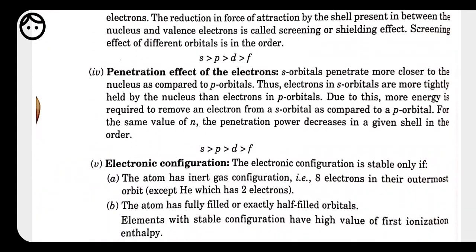Fourth is the penetration effect: s orbitals penetrate more closely to the nucleus compared to p orbitals. Electrons in s orbitals are more tightly held by the nucleus than electrons in p orbitals. Therefore, more energy is required to remove an electron from an s orbital than from a p orbital. Fifth is electronic configuration: if an atom has a stable electronic configuration, removal of electron becomes very difficult; if not stable, electron can be removed easily.